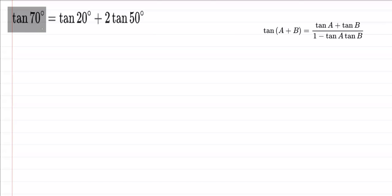We have one question from the chapter trigonometric function class 11. Here we have to prove that tan 70° is equal to tan 20° plus 2 times tan 50°.